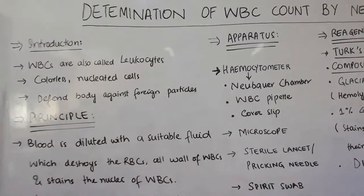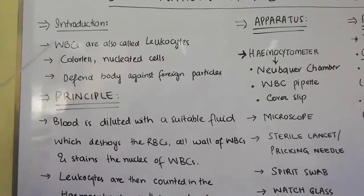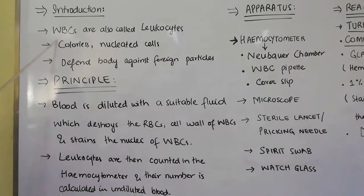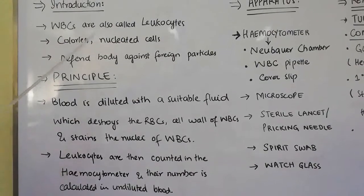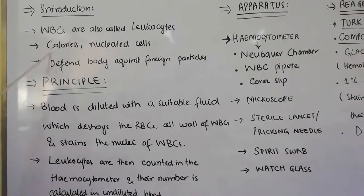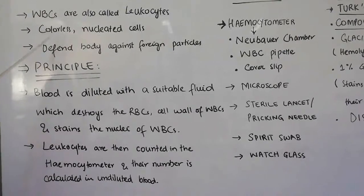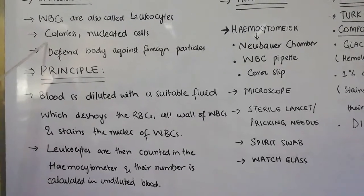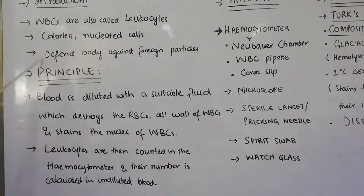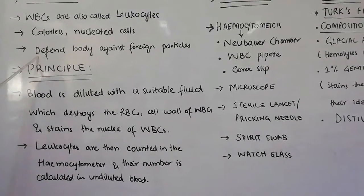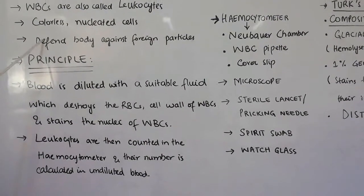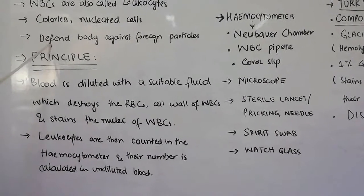First, a little introduction about WBCs or white blood cells. As you already know, WBCs are also called leucocytes. They are colorless nucleated cells that are circulating in the blood. The function of WBCs is that they defend the body against foreign particles, which may be bacteria, viruses, or any invading organism in the body.